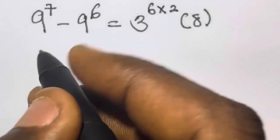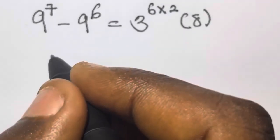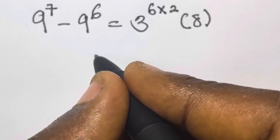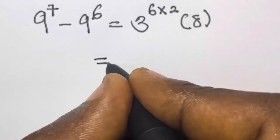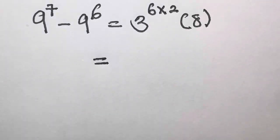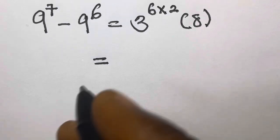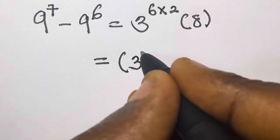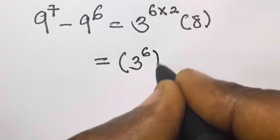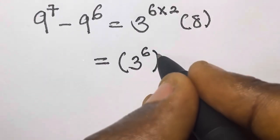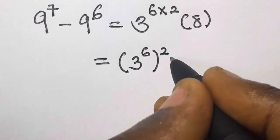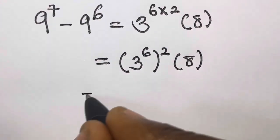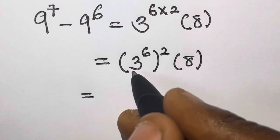So we have 9 raised to power 7 minus 9 raised to power 6 equals 3 raised to the power 12 times 8. And we know that 12 can be further broken down to 6 times 2, so this simply means we have 3 raised to the power 6, raised to the power 2, times 8.